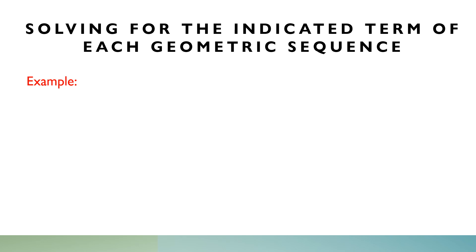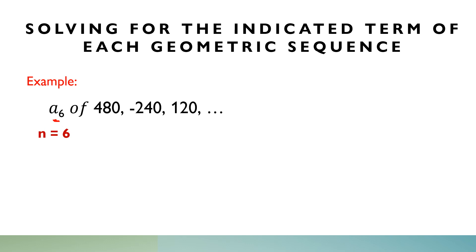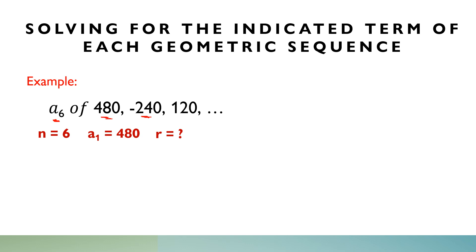Another example. We are going to solve for a sub 6 from the sequence 480, negative 240, 120, and so on. From the given info, our n is 6, taken from a sub 6, while the first term is 480 and the ratio is still unknown. To solve for the ratio, we divide negative 240 by 480, which equals negative one-half.